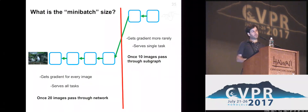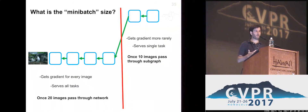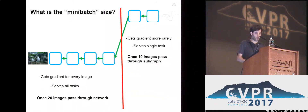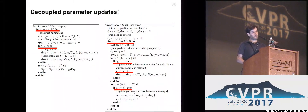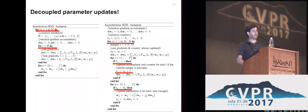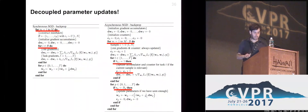This leads to a decoupled scheme for updating the parameters, which frees us from the concept of a mini-batch and allows any layer to determine on its own when to update its parameters. I won't go into the details of the algorithm here — I'll be happy to present that at the poster. The bottom line is that this is what allows us to combine all of those diverse datasets and train our network end-to-end jointly across all tasks.